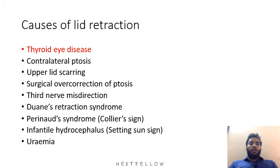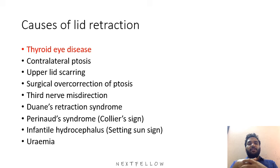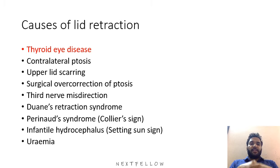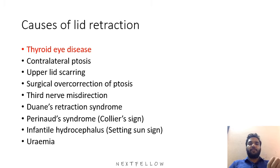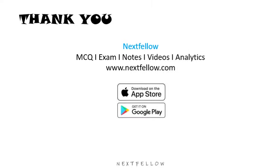Causes of lid retraction include thyroid eye disease, contralateral ptosis, upper lid scarring, surgical overcorrection of ptosis, third nerve misdirection, Duane's syndrome, Parinaud's syndrome, and infantile hydrocephalus — all of which can cause lid retraction.